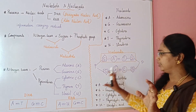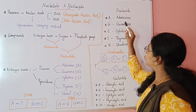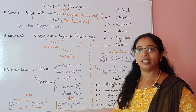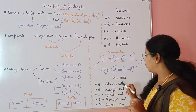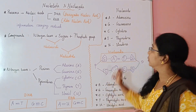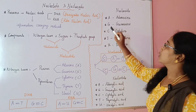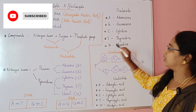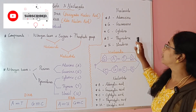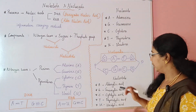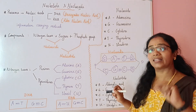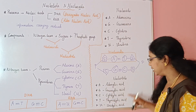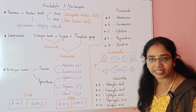Now, to answer exam questions about nucleosides and nucleotides: adenine gives adenosine, guanine gives guanosine, cytosine gives cytidine, thymine gives thymidine, uracil gives uridine. For nucleotides — from acid: adenylic acid, guanylic acid, cytidylic acid, thymidylic acid, uridylic acid.